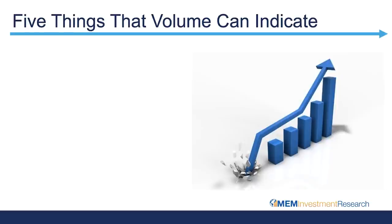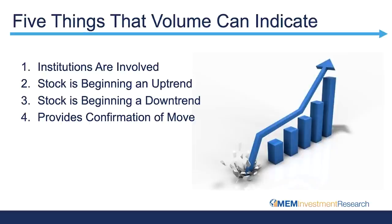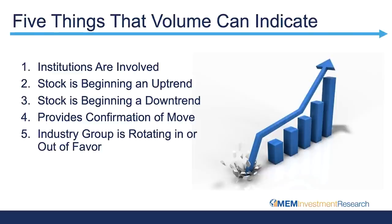Let's talk about five things that higher volume can indicate for your stock. First, institutions or even a gathering of individuals are either getting into or exiting a stock en masse. Second, the stock could very well be beginning an uptrend — and that volume is a critical component when combined with the chart pattern. Third, it could be in the beginning stages of a downtrend, which you don't want to be part of. Fourth, volume provides confirmation of that uptrend or downtrend. And fifth, this volume will help you decide whether an industry group or sector is rotating in or out of favor.